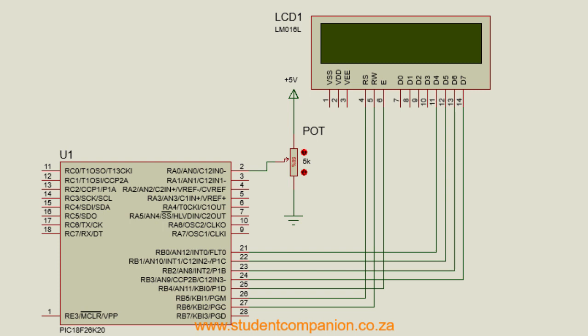In tutorial 5, interfacing LCD display with PIC microcontroller, and in tutorial 6, the analog to digital converter, we used the PIC 18F peripheral library. The challenge is Microchip is phasing out the PIC 18F peripheral library, which is no longer included in XC8 compilers from version 1.35. You now have to download and install them separately, and they are called legacy peripheral library.